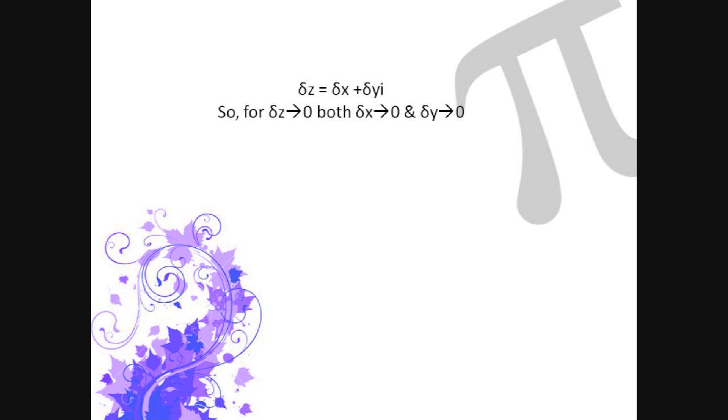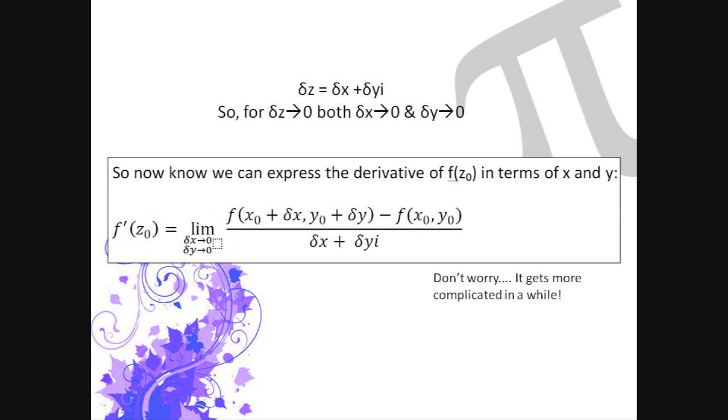So we can now express the derivative of f of z0 in terms of x and y. The derivative of f of z0 equals the limit as delta x tends to zero and delta y tends to zero of f of x0 plus delta x, y0 plus delta y minus f of x0, y0 over delta x plus delta yi. The two composite conditions that combine to make the limit means that this calculation of the derivative gets very complicated. So we can now deal with the two limits separately in parallel, one part dealing with when delta x tends to zero and the other when delta y tends to zero.